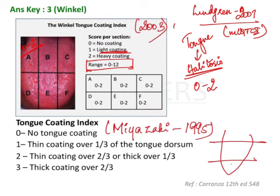You must also remember the Miyazaki index, given by Miyazaki et al. in 1995. He divided the tongue into thirds. Score 0 is given when there is no tongue coating at all. Score 1 is coating present in less than one third of the dorsum. Score 2 is less than two thirds of the dorsum. Score 3 is when the entire tongue surface is covered.